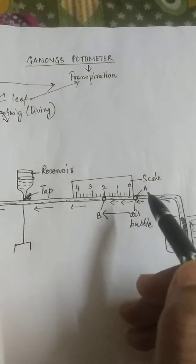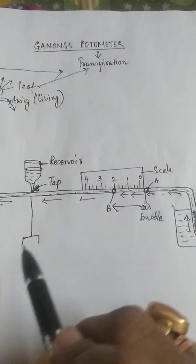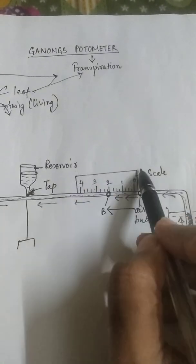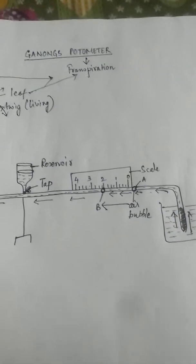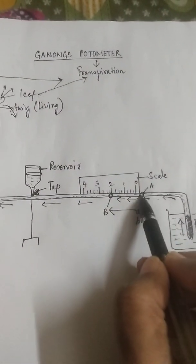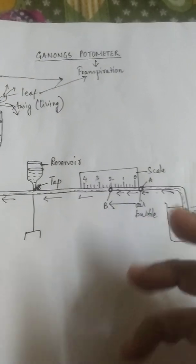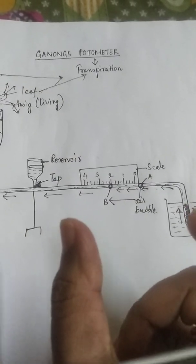So there is an indirect relationship between transpiration and the water being sucked from this colored water containing beaker. And there is also a direct relation with the air bubble being pushed forward.